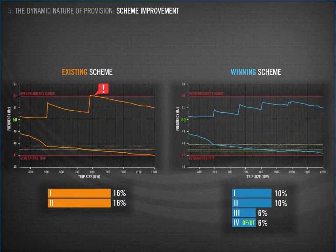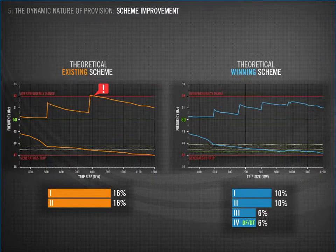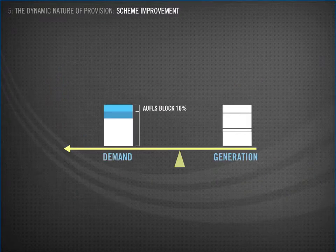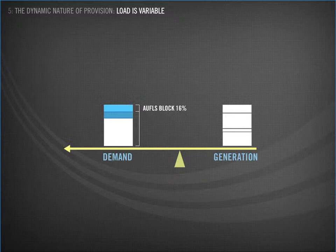Here are our existing scheme on the left and the winning scheme on the right. We've changed these to theoretical, and that's because of the dynamic nature of provision. Here's our seesaw again, showing the existing scheme. In an ideal world, we have two blocks of 16%.